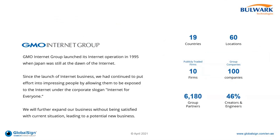GMO GlobalSign is one of its security arms. We launched our internet operations in 1995 when Japan was still at the dawn of the internet. Under the corporate slogan 'Internet for Everyone,' we continue to expand our business. We are spread across 90 countries at 60 locations, listed publicly on various stock exchanges, with more than 6,000 group partners and engaged creators and engineers worldwide.